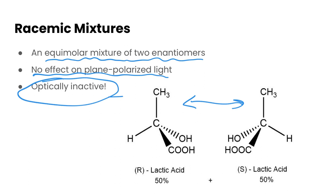As we get further into organic chemistry, you'll see some reactions that produce both optical isomers. If you take those products and put them in a polarimeter, it would look like nothing is optically active because you have a racemic mixture. That's an interesting fact to keep in the back of your mind, as we'll come back to it in another video.